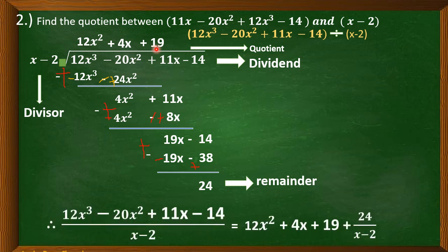Therefore, 12x cubed minus 20x squared plus 11x minus 14 divided by x minus 2 is equal to 12x squared plus 4x plus 19 plus the remainder 24 over the divisor x minus 2.